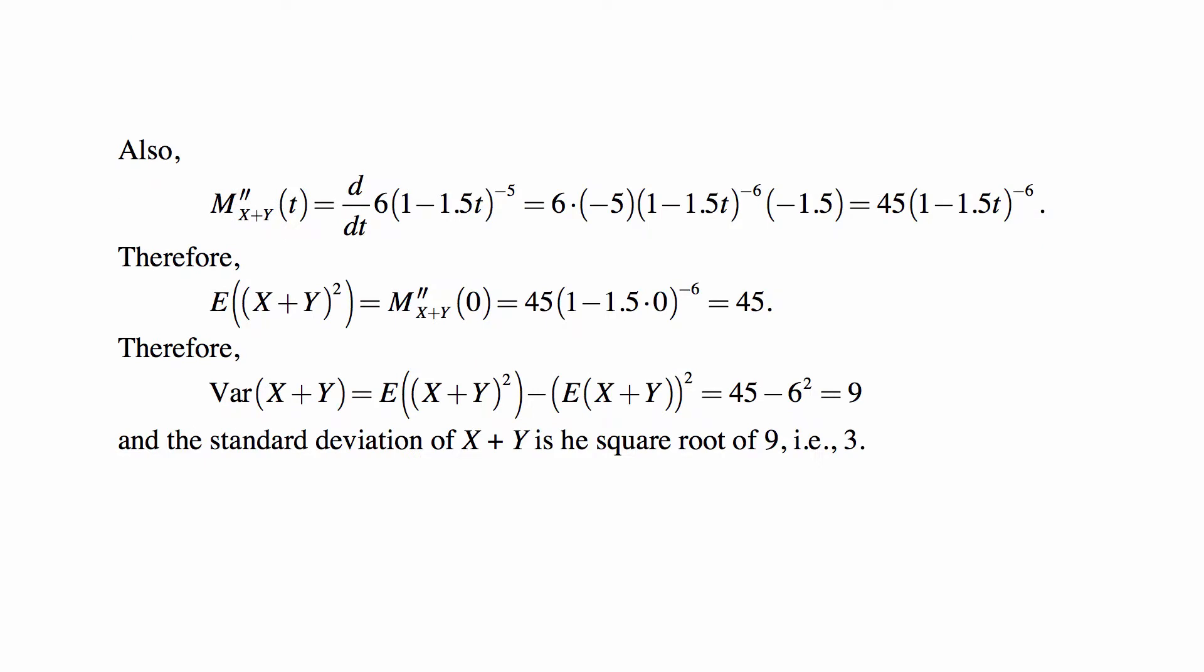Then we look at the second derivative, which will be the derivative of 6(1-1.5t)^(-5). That's 6 times -5 times (1-1.5t)^(-6) times the derivative of the expression inside, which is -1.5, because the derivative of 1-1.5t with respect to t is just -1.5. So 6 times 5 times 1.5, it's 45. And minus and minus cancel, so it's just 45(1-1.5t)^(-6).